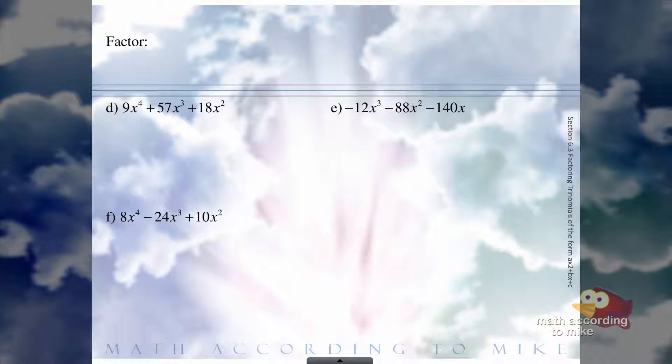For the very first one there, our GCF would be 3X squared. Pulling out the 3X squared, we are left with another 3X squared plus 19X plus 6. The 3X squared that we pulled out stays right there. It does not go anywhere. We just copy it down.